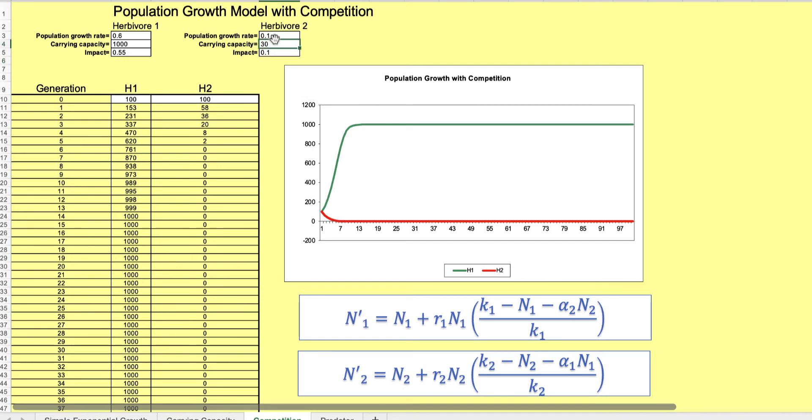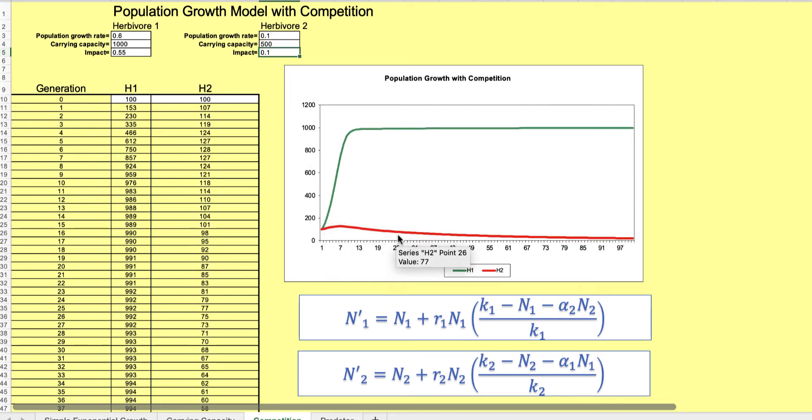But if the cows have a carrying capacity of, well they can't have more because they're bigger, we'll just say 500 or half of that. They reach it kind of quickly and then they sort of die off. But let's increase their population growth so that cows are doing pretty well. They still just die off faster, you see.